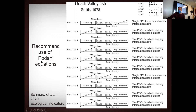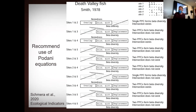Through simulations using doubs fish data from the 1970s, this paper recommends the use of the Podani equations over the Baselga family. You can read that paper for more detail about how to decide which family of beta diversity metrics to use.